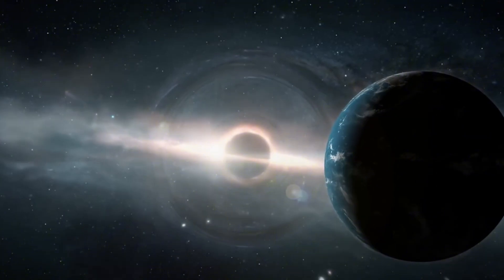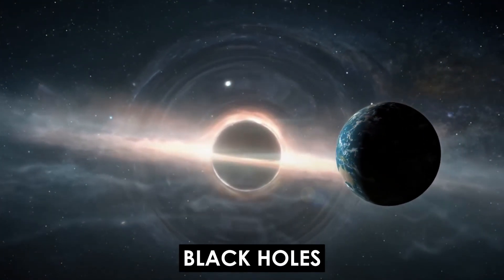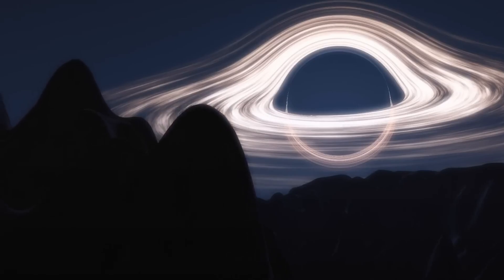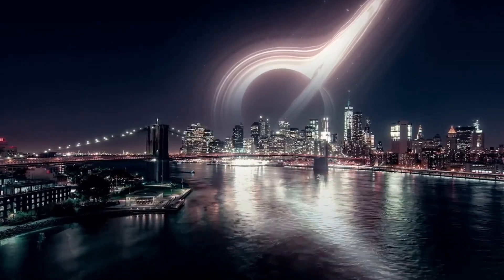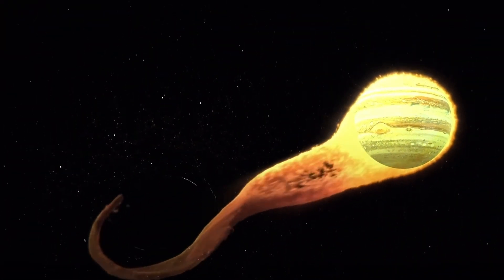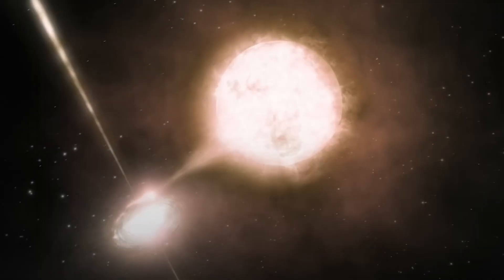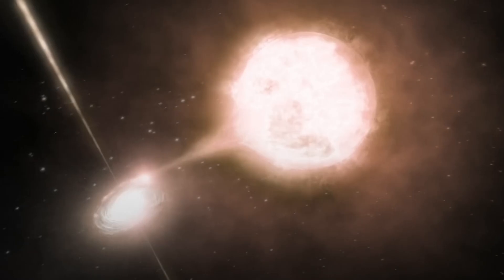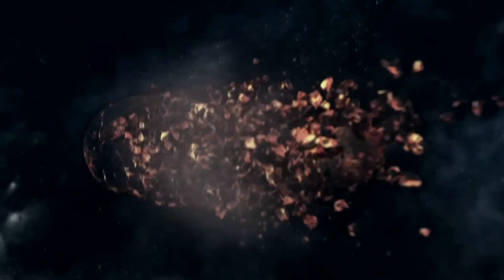Let's dive into one of the most feared cosmic predators, black holes. These invisible monsters roam the universe with a gravitational pull so strong not even light can escape. If a rogue black hole ever wandered into our solar system, the results would be catastrophic. First, it would start wreaking havoc on the orbits of planets, flinging some into space and pulling others into fiery collisions. Our sun might even get dragged toward the black hole, spiralling closer until it's torn apart in a spectacular cosmic light show.